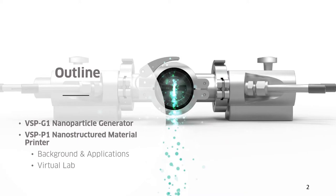I'd like to give a quick outline on how the remainder of the presentation is going to unfold. To begin with, I'll discuss the VSP-G1 nanoparticle generator, which is really the product at the heart of all of VSParticle's technology and is needed to prepare the nanoparticles before they're deposited on various substrates. Next, I'll discuss the VSP-P1 nanostructure material printer. Finally, we'll have a virtual lab tour provided by my colleague Sofia in which she will prepare a simple sample using the VSP-P1.